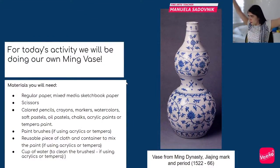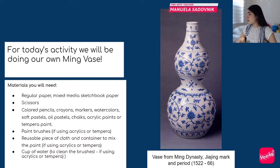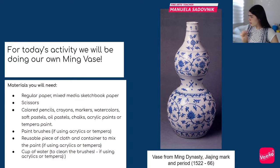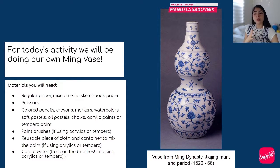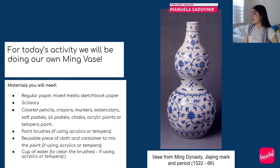For today's activity we'll be doing our own Ming vase. The materials you will need are: regular paper or mixed media sketchbook paper, scissors, and glue or glue stick — either works fine. Colored pencils, crayons, markers, watercolors, soft pastels, oil pastels, chalks, acrylic paints, or tempera paint — either works for today's activity. Paint brushes if you're using acrylics or tempera, a reusable piece of cloth, and a container to mix the paint if you're using acrylic or tempera.